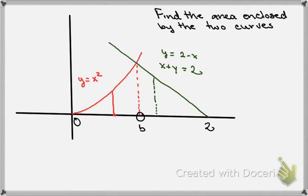One of them would be the integral from 0 to b of the function y equals x squared. And just for emphasis, I'm going to put here minus the lower function, which is 0, dx. That would take care of the red portion.